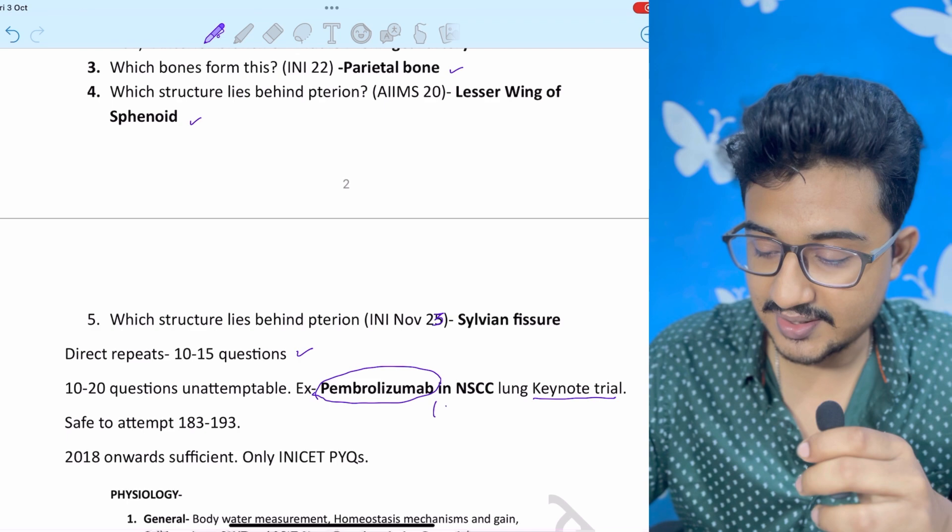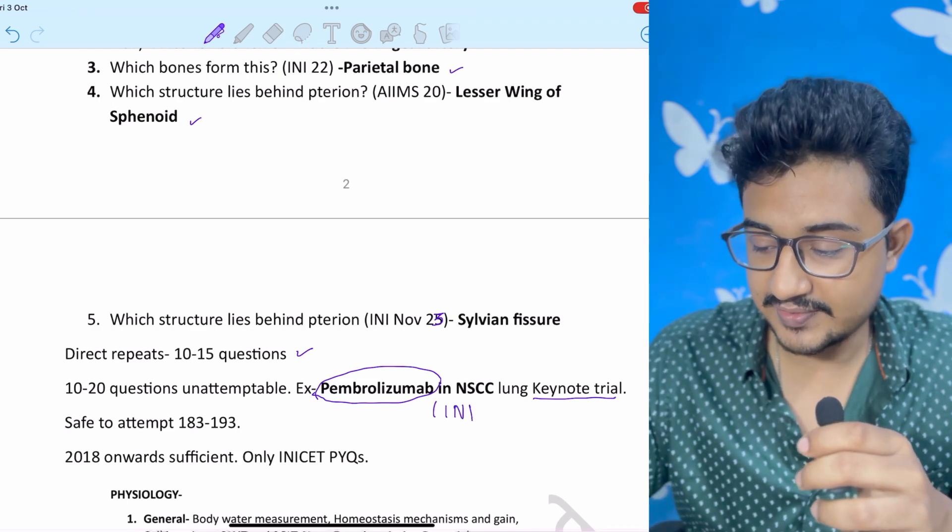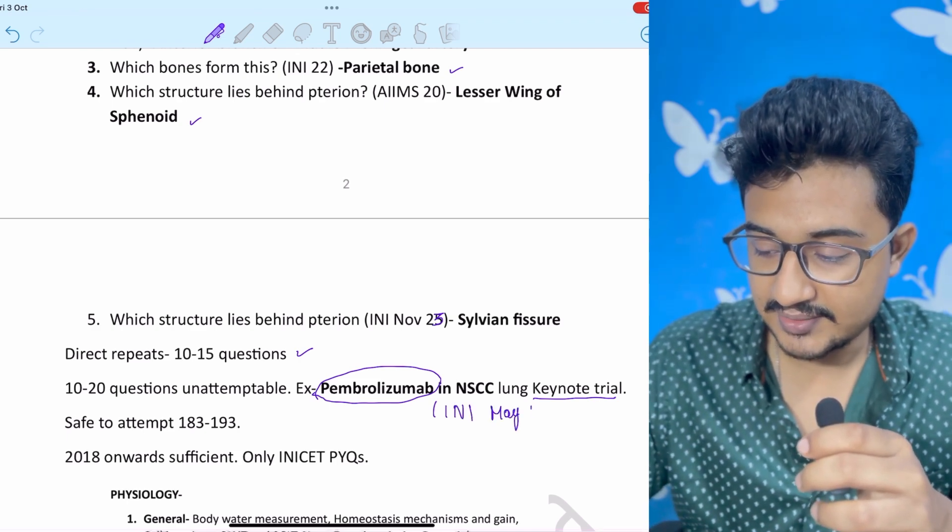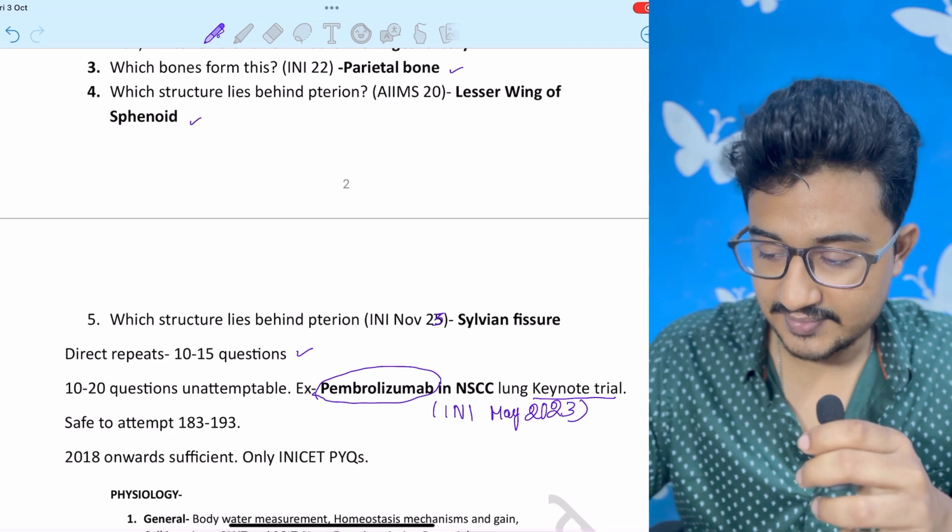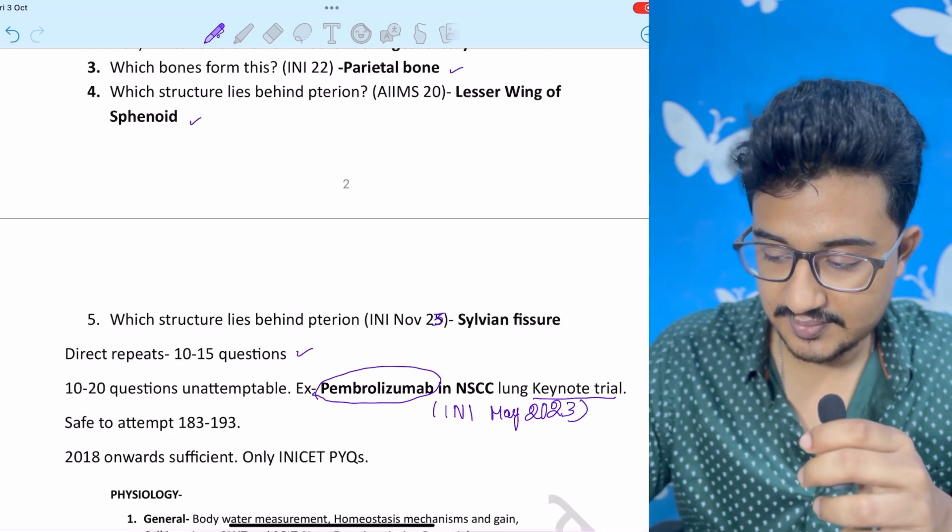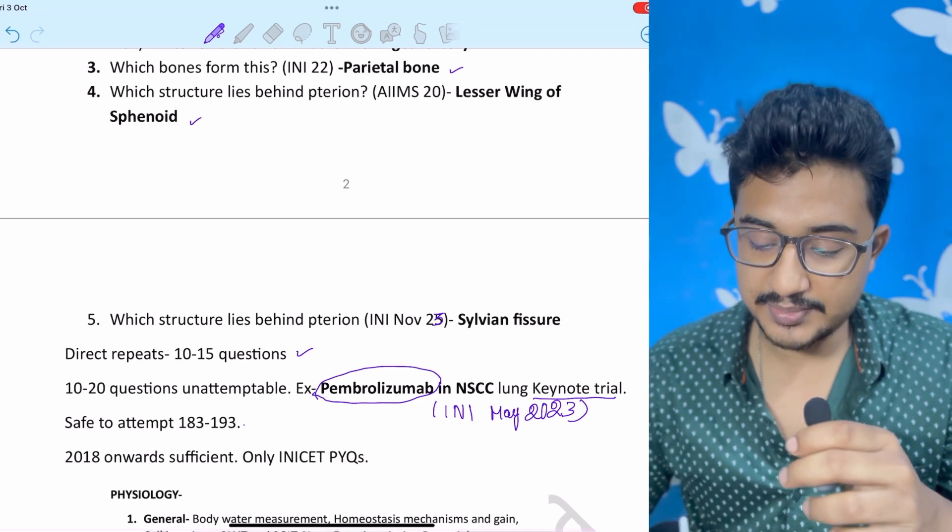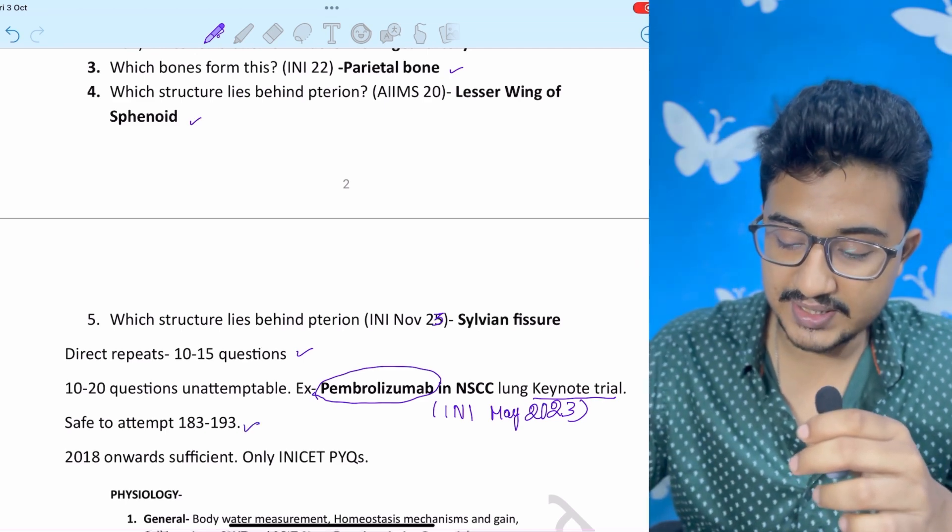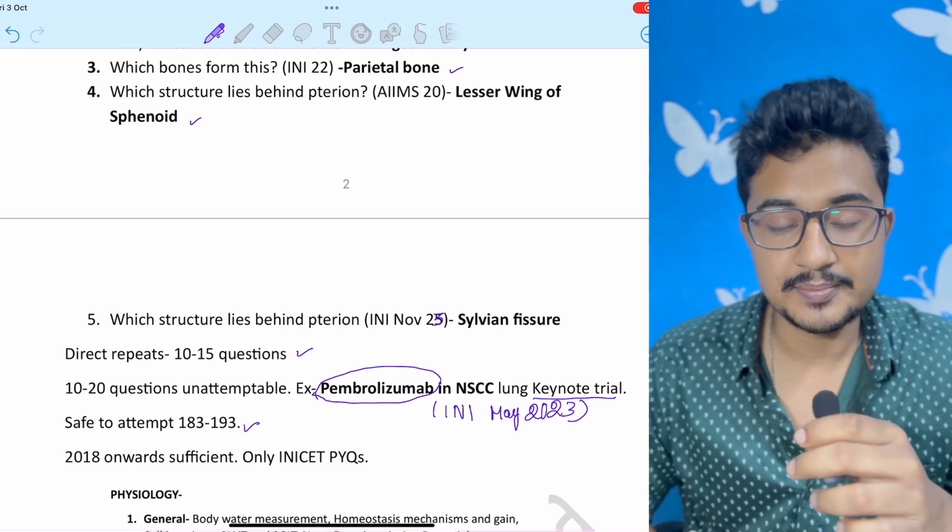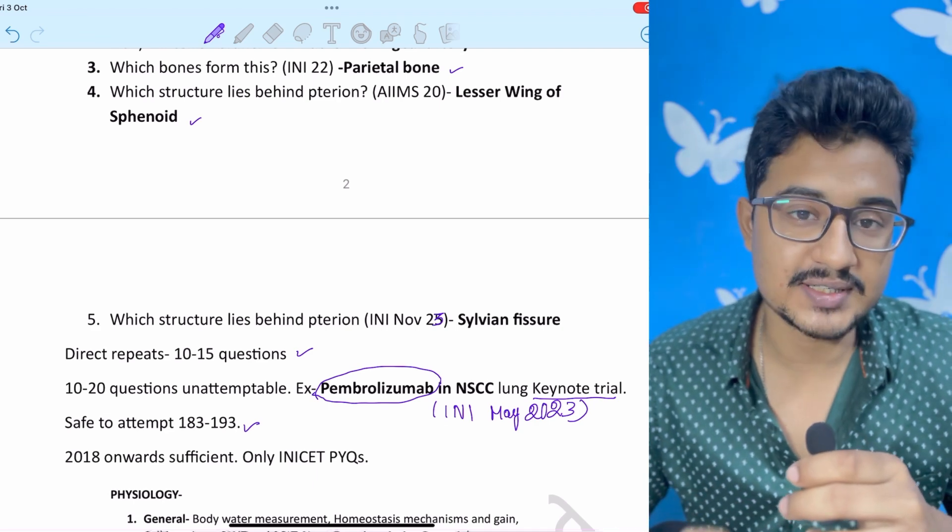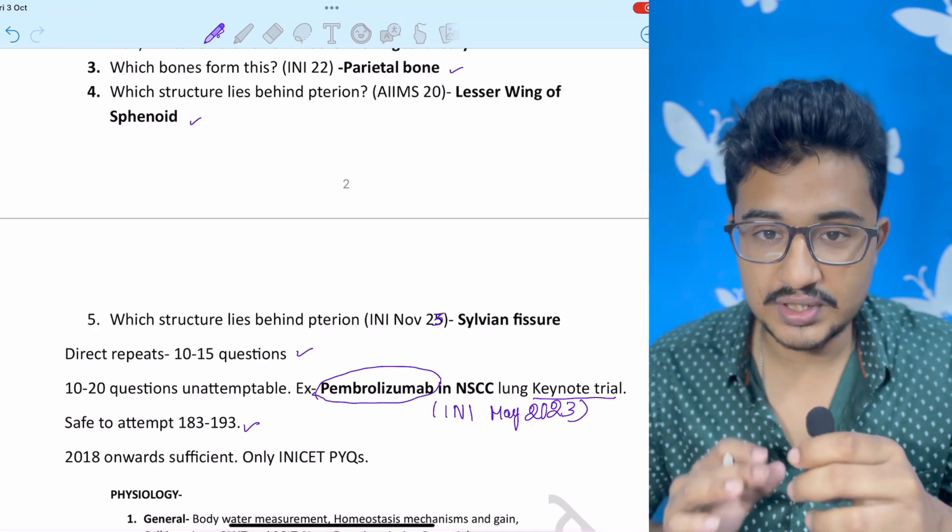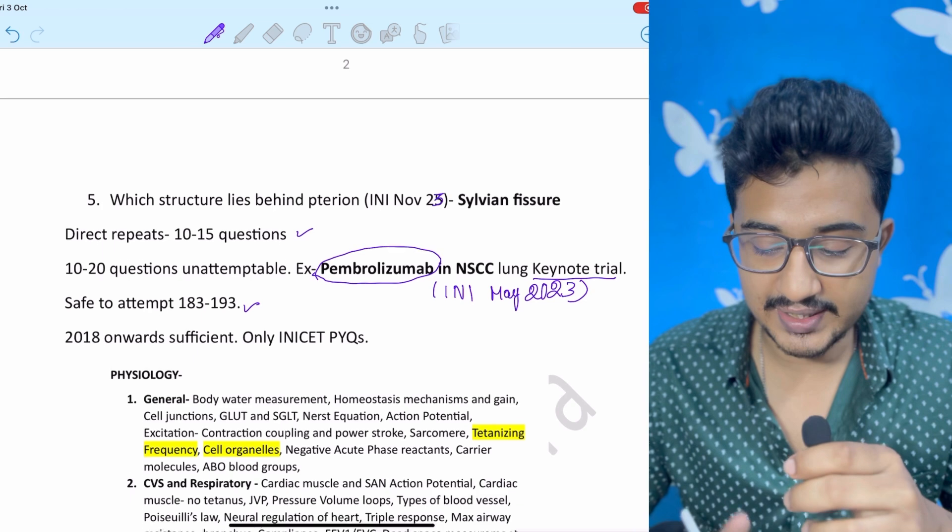But this time they gave the keynote trial. It was given in INICET May 2023. So some questions will be there which are unattemptable. So safe to attempt between 183 to 193 because if you don't get a top thousand rank in INICET you are not going to get a good clinical seat if you are a UR candidate.